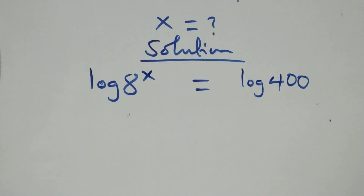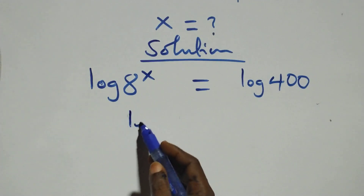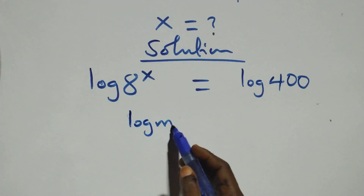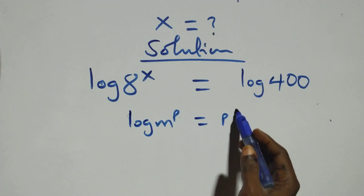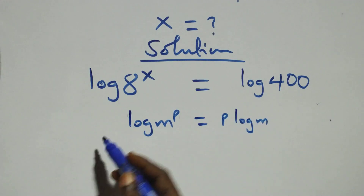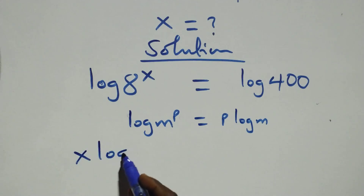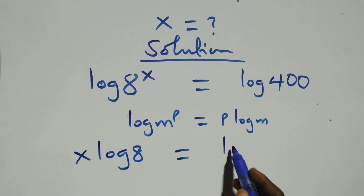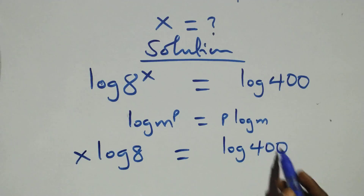The next step here, we apply the power rule of logarithm. When we have log m raised to power p, this is the same thing as p log m. So this becomes x log 8 equals to log 400.